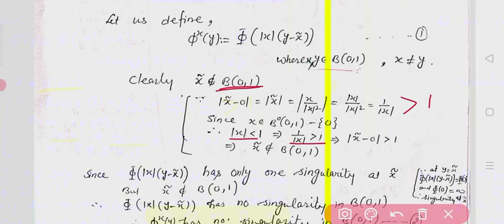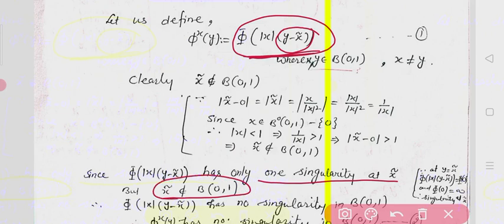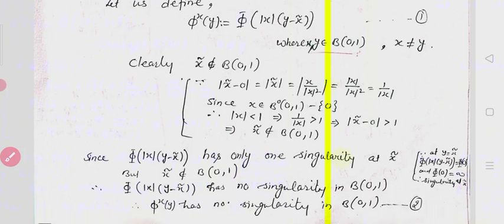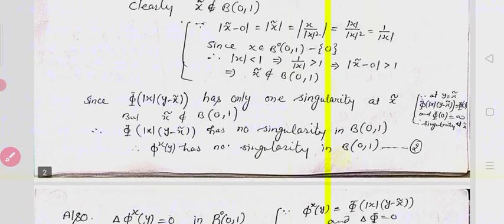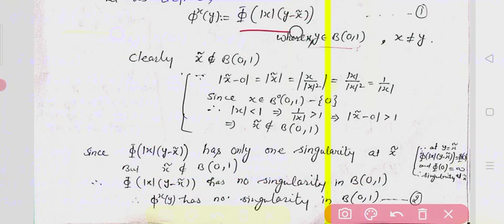Since x̃ does not belong to B(0,1), the function Φ(|x| · (y − x̃)) has a singularity only when y = x̃. But x̃ is not in the unit ball, so this function has no singularity in the unit ball. Therefore φ(x, y) = Φ(|x| · (y − x̃)) has no singularity in the unit ball.